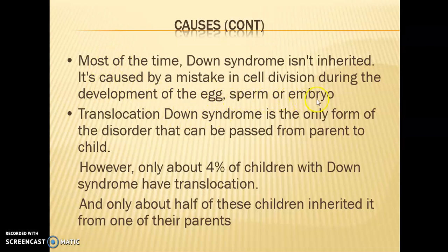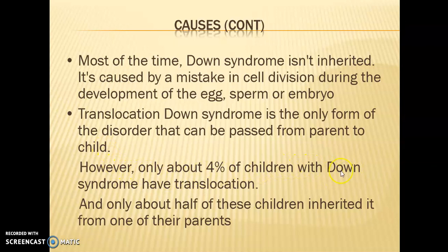The cell division mistake can originate from the mother's ovum, the father's sperm, or the embryo. Translocation Down syndrome is the only form that can be passed from parent to child — it is the only inherited form of Down syndrome. However, only about four percent of children with Down syndrome have translocation Down syndrome, meaning only four percent is inherited from parents.